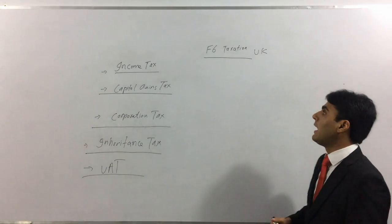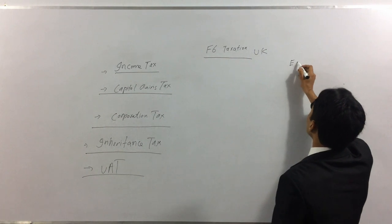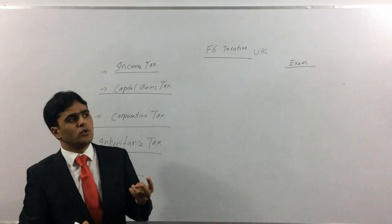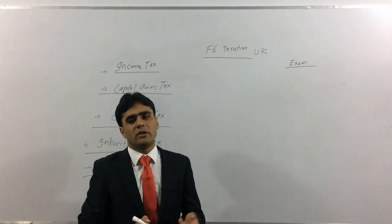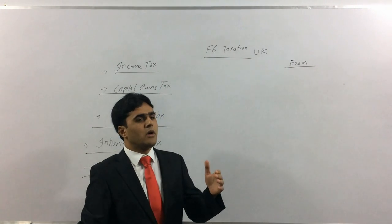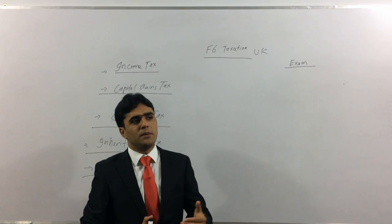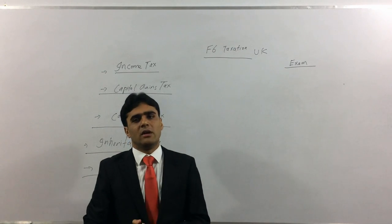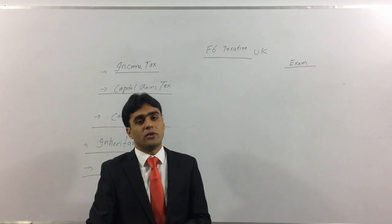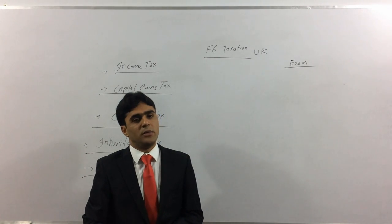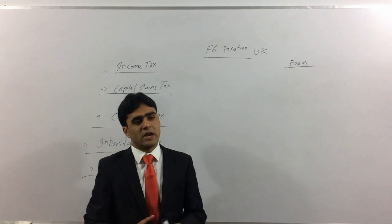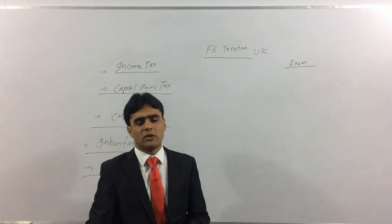Those are the topics that form the ACCA F6 syllabus. As for the exam itself, there are two options available: a paper-based exam (PBE) and a computer-based exam (CBE). If you are familiar with and confident in computer-based exams, you should go for CBE. Otherwise, choose PBE. Note that at this skills level, unlike the knowledge level, you will not get instant results from the CBE — you still wait for the normal result date.